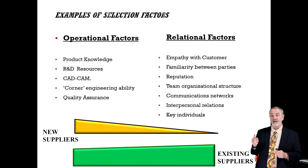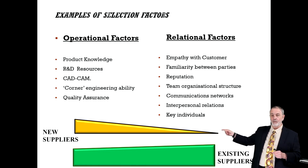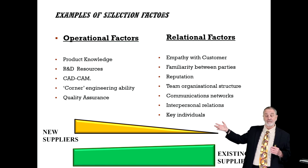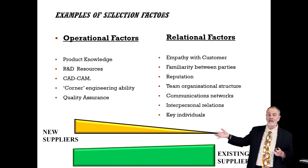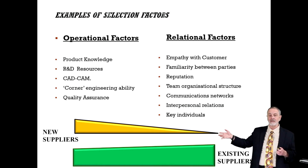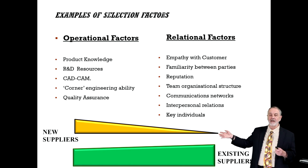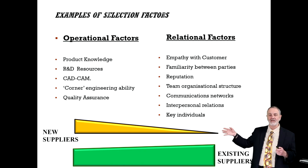With new suppliers, it's very different. We haven't had any experience, so the relational factors are minimal. We really focus a lot of our sourcing on operational factors. And in the second podcast in this series, I'm going to talk about the operational factors predominantly. So with new suppliers, we go out and we evaluate their quality, their operations, their processes, their business, etc.